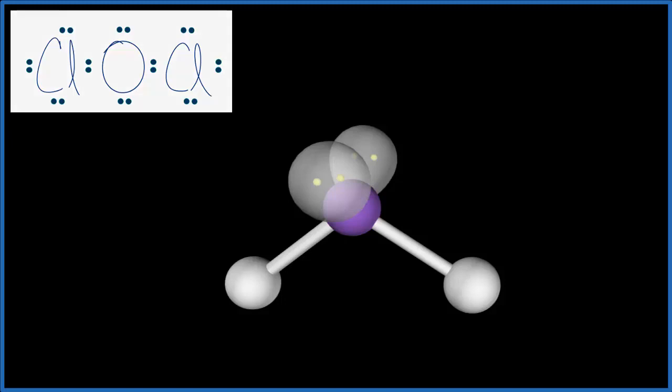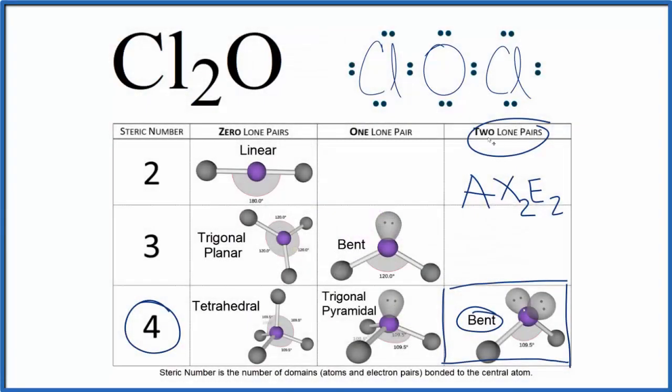Let's go back to our Lewis structure. So to recap, we used the Lewis structure to determine the number of atoms and lone pairs. You can use this table based on steric number and lone pairs to see that Cl2O is a bent molecular geometry.